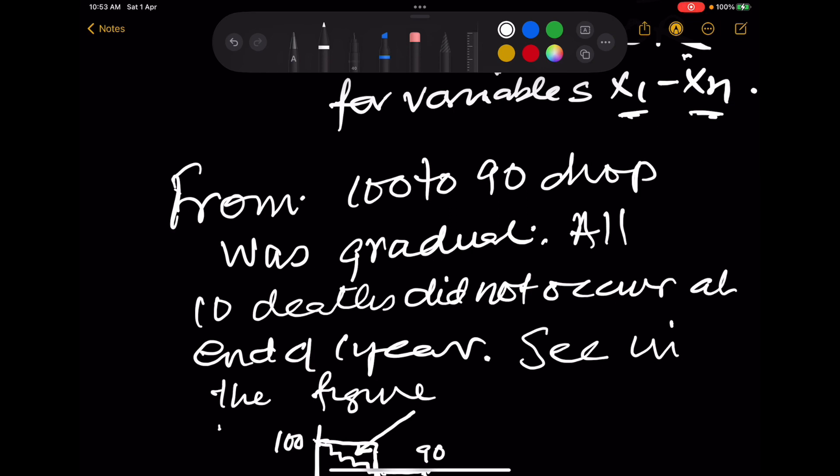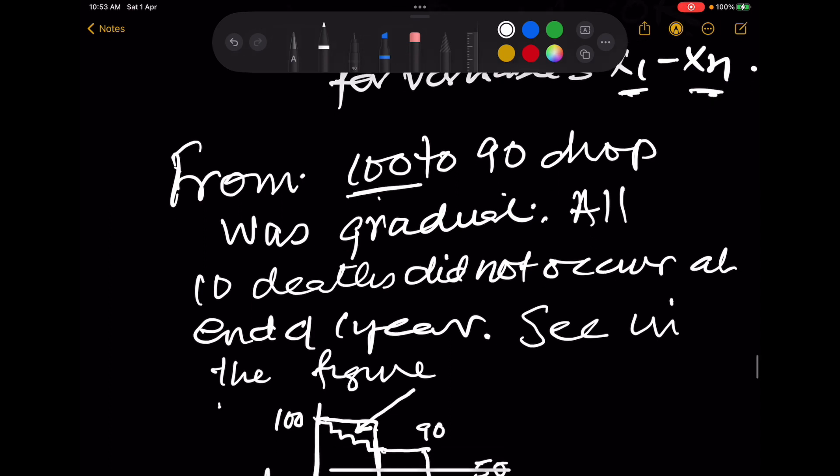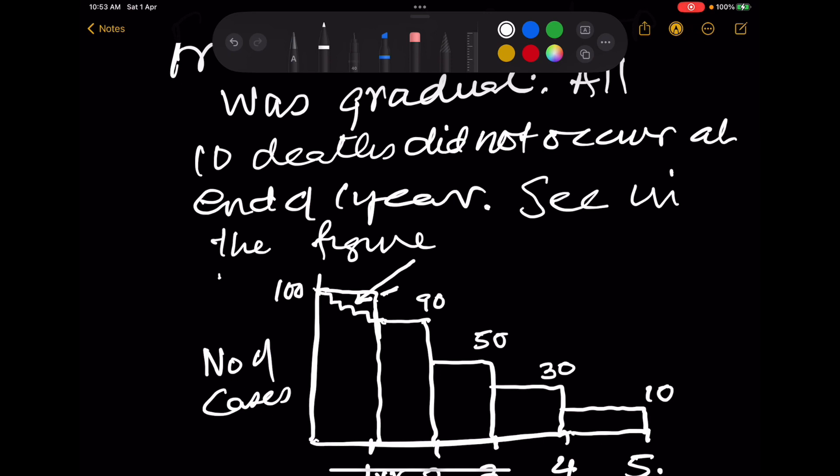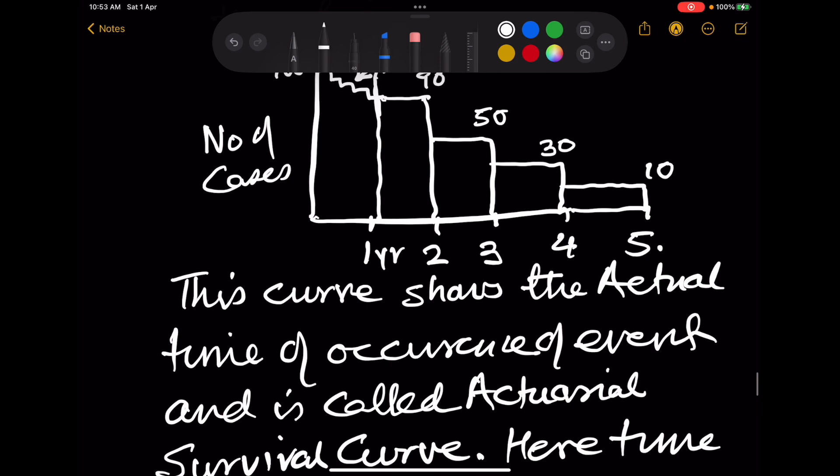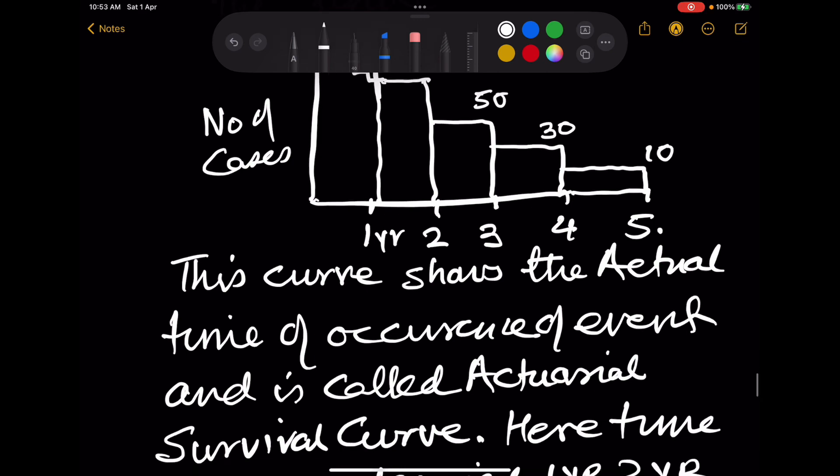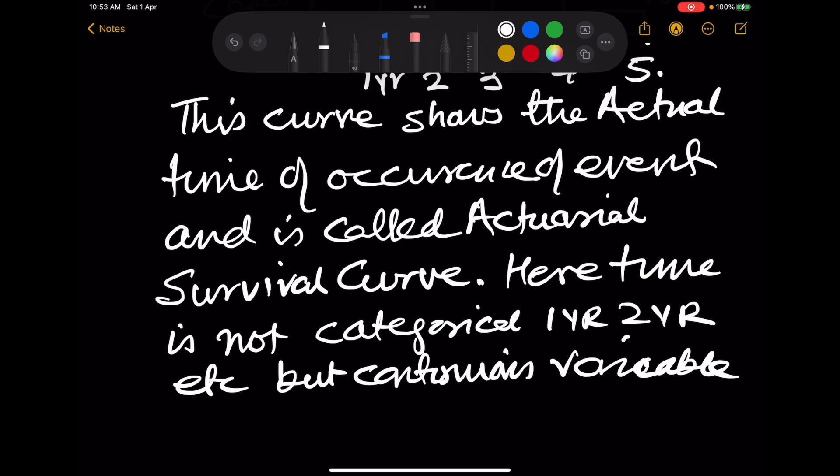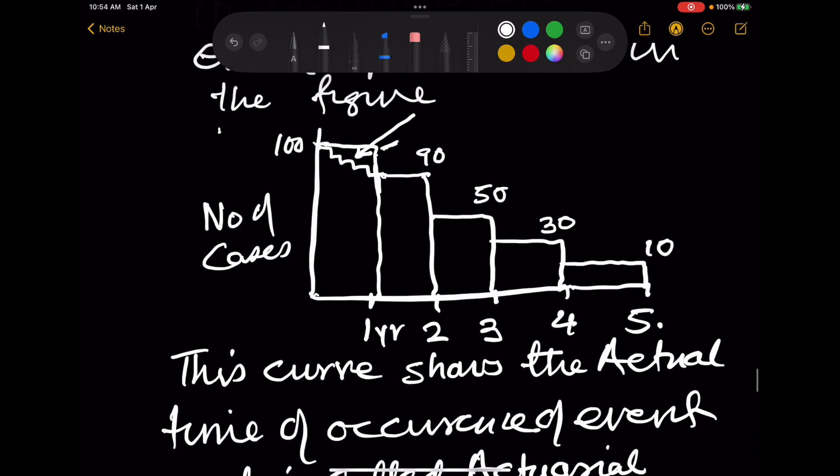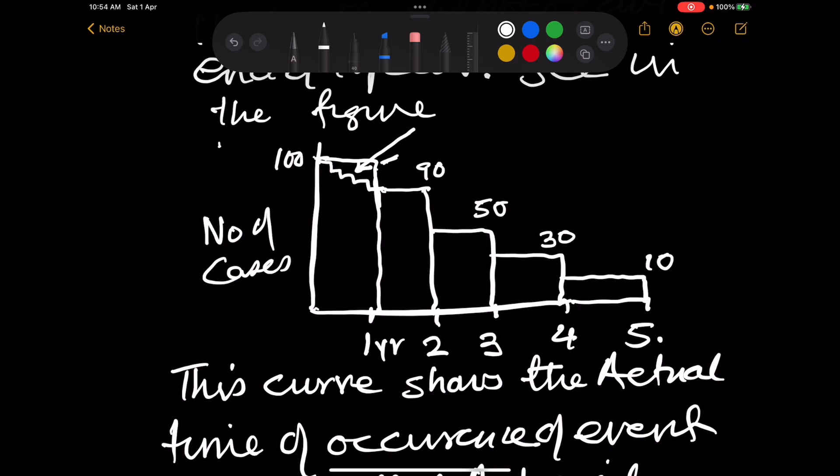Now you understand: the first year, the drop from 100 to 90 was not on the last day. It occurred during the year. And so the curve is not sudden, it is stepwise. Now the stepwise which records the actual time of occurrence of an event is called actuarial survival curve. Here time is not categorical—one year, two year—here the time becomes a continuous variable. So this time distribution of an event.